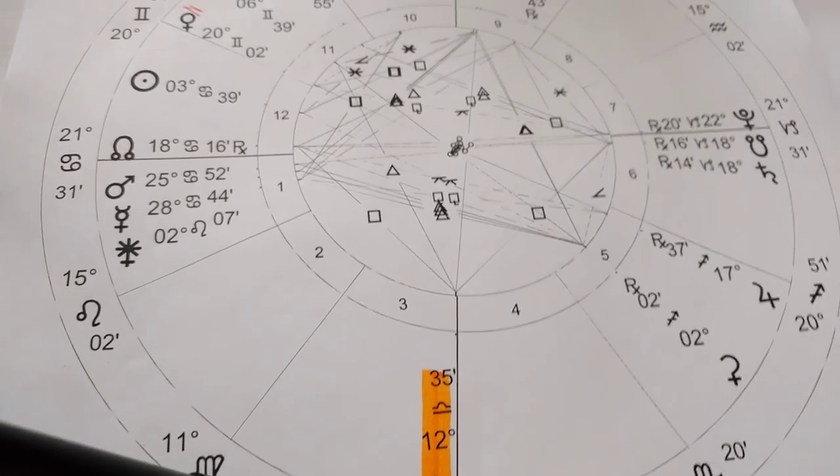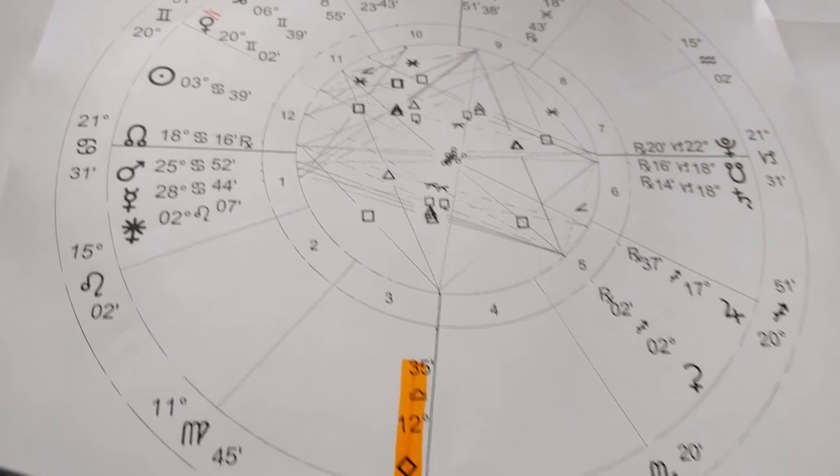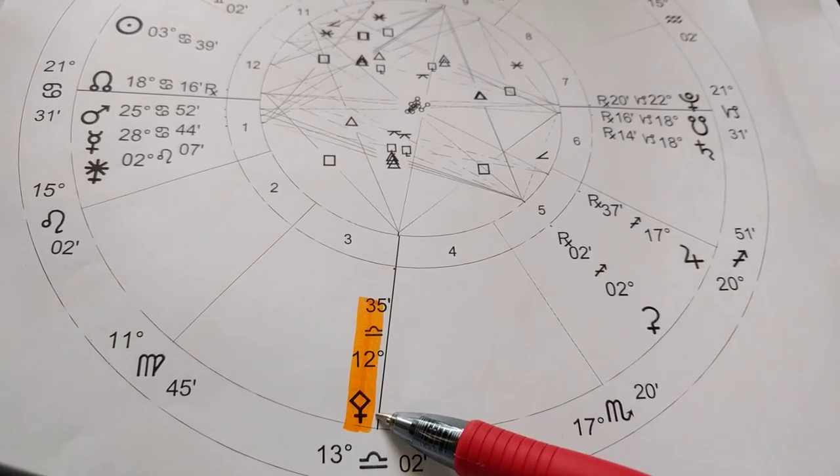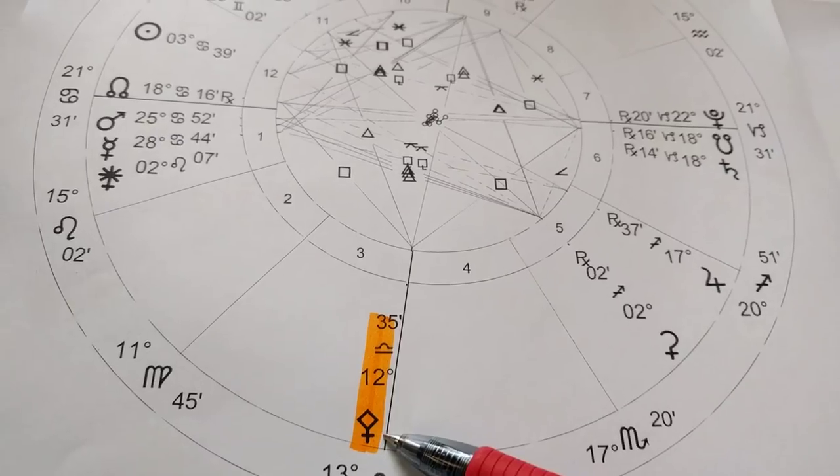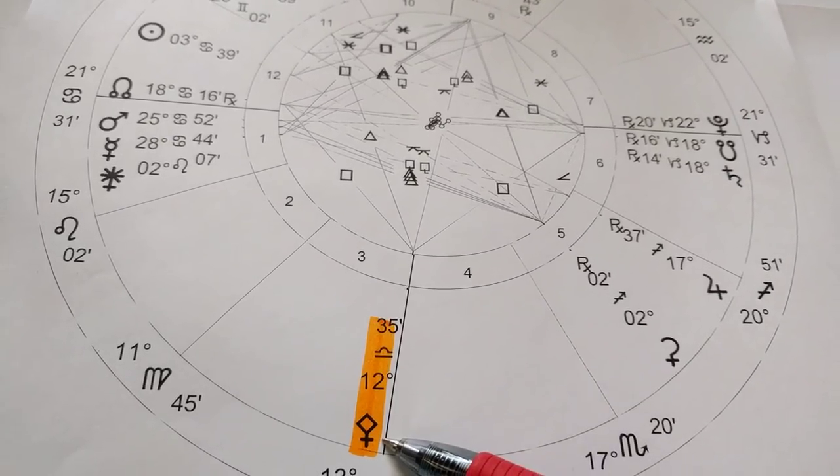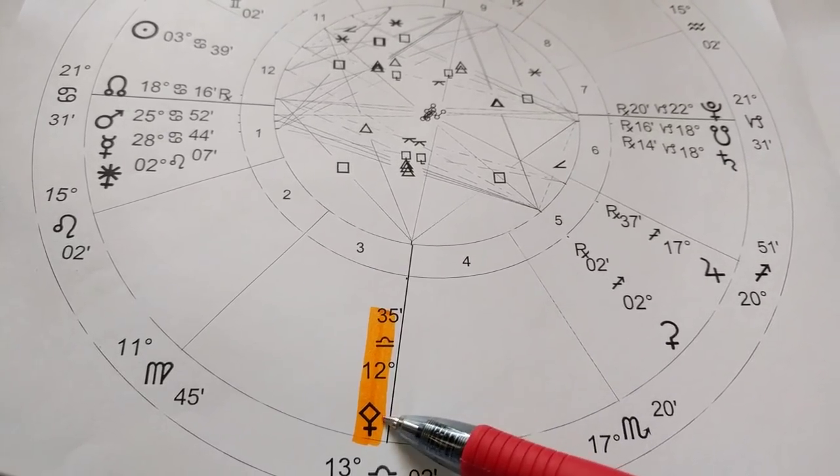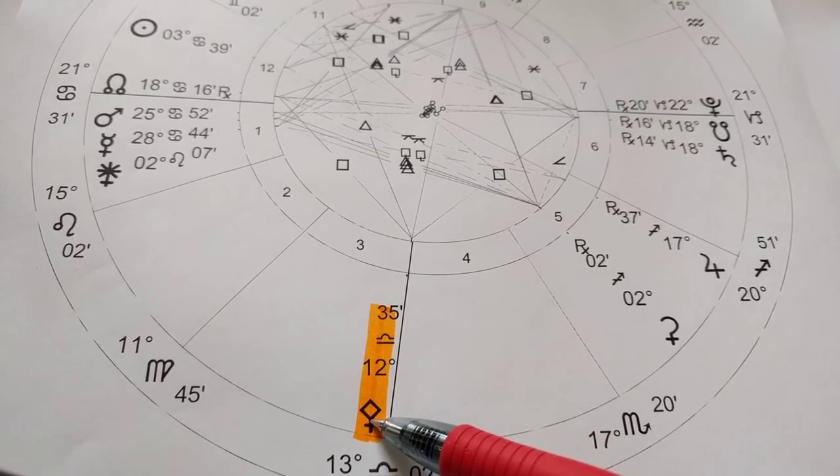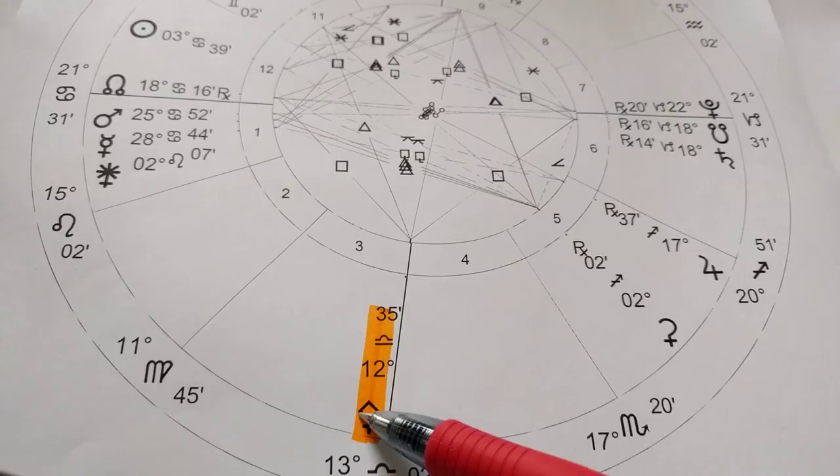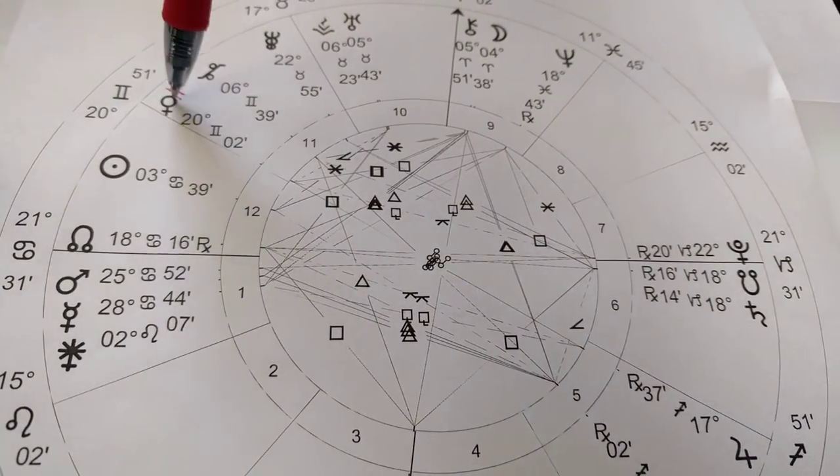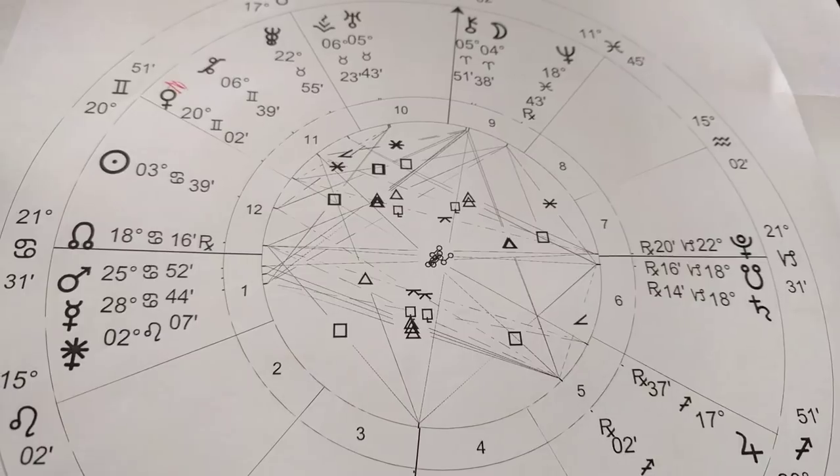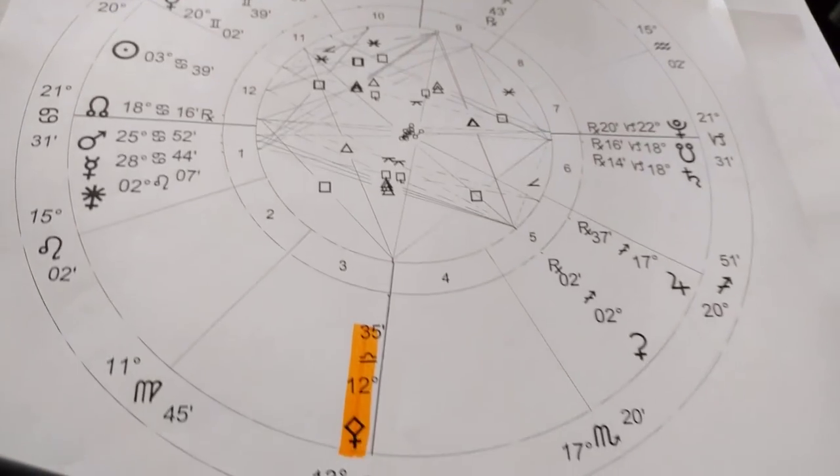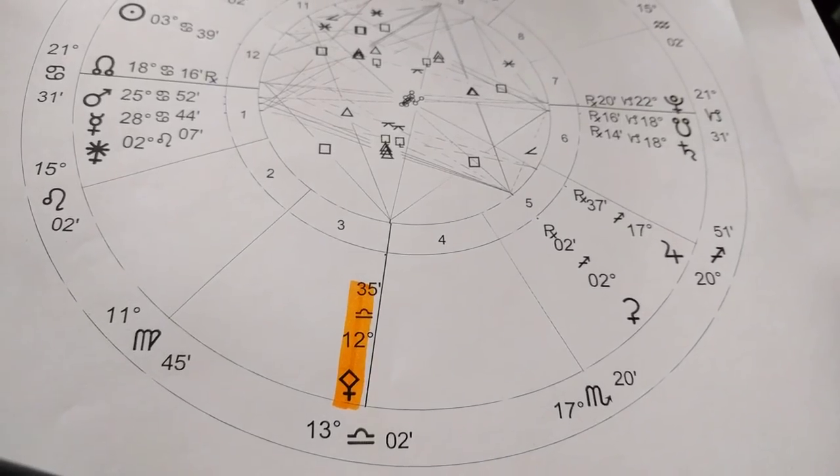Pallas Athena is actually associated with masculine energies of the fire and air signs, whereas Venus is associated with more feminine energies. So their glyphs are similar, but Pallas Athena has edges and corners, right? Whereas Venus is all curve.